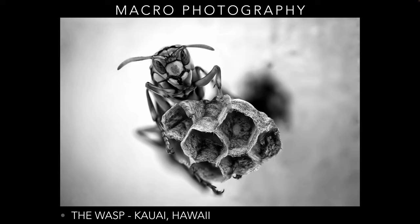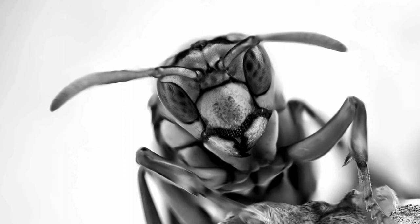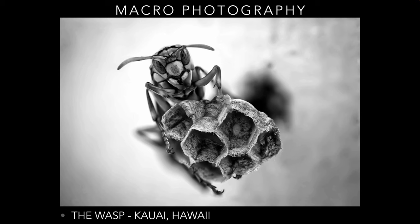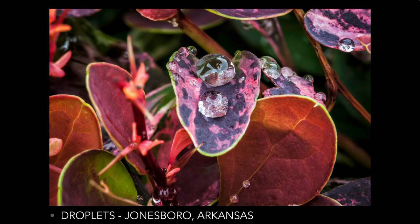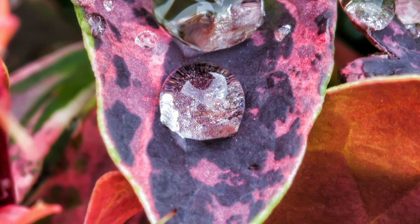Next we're going to talk about macro photography. This is a specialized version of photography that I really enjoyed doing, but it's one of those types that are conditional — you've got to go and hunt for it. The art of macro photography is getting very close to things and really pulling out those details. This is a wasp; here are some water droplets on a plant where you can see little aerated bubbles; and this is an orb weaver on its web that I took while hiking in Kauai — I really like the light, the web, and the angle of it.